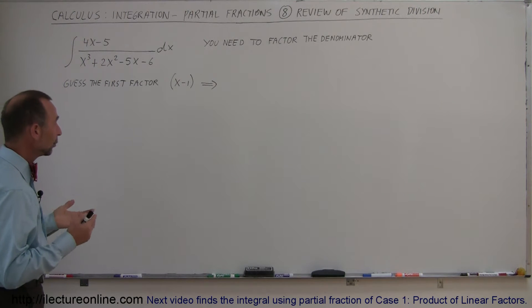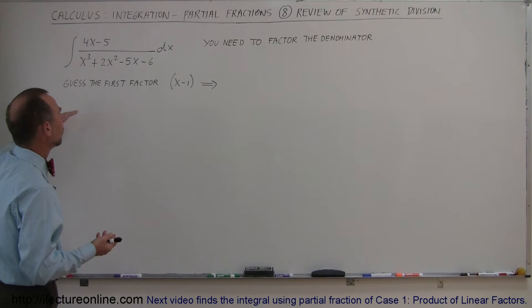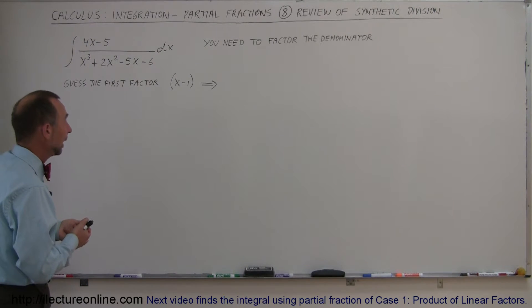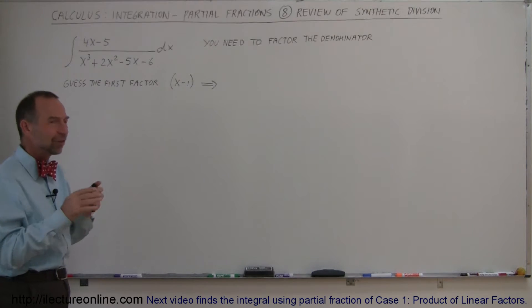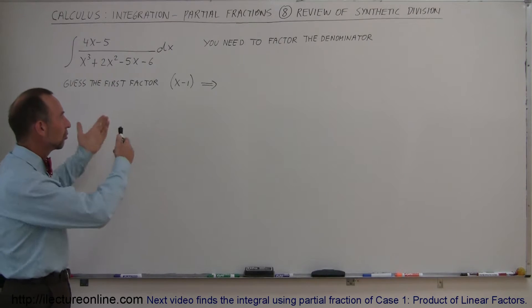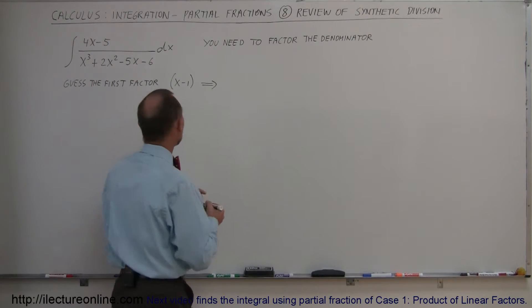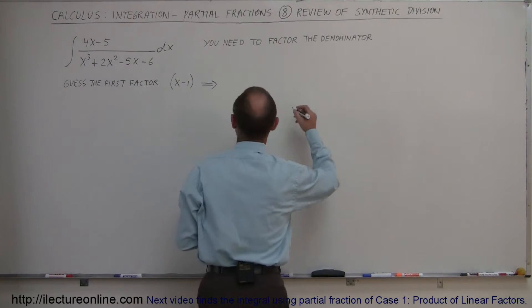The way you do this is you first guess your first factor. Maybe x-1 would be one of the factors in this denominator, and if it's wrong, then you try another one, but this is a special technique. It's not just a pure guessing game. Let's start with assuming that x-1 may be our first factor. The way you do synthetic division is you take the coefficients of the terms in your denominator and write them down.